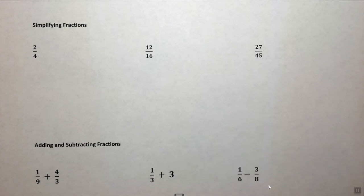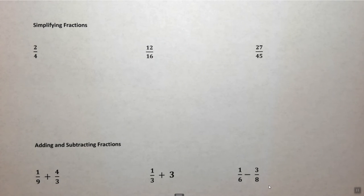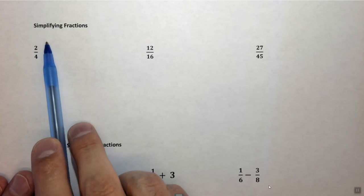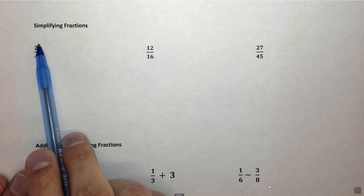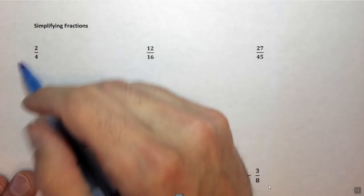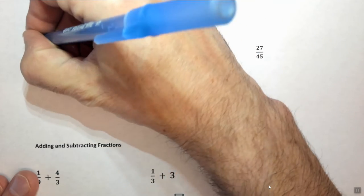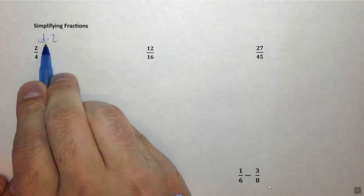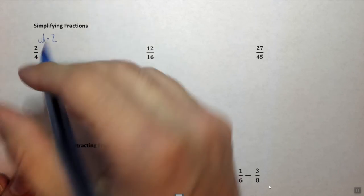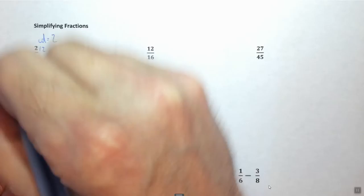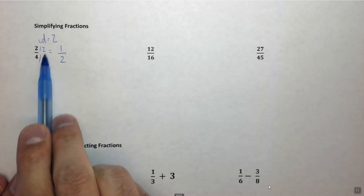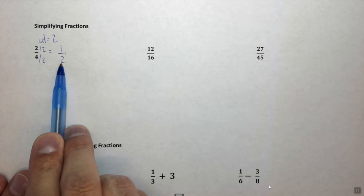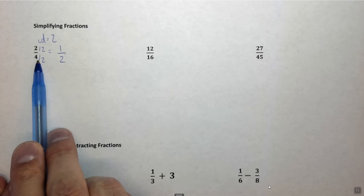So let's go through these, and I'm going to go through this relatively quickly. The first thing we have here is simplifying fractions. We have 2 over 4 and we want it in its simplest form. We need to find the common denominator, and in this case the common denominator is 2. So if we take the 2 and divide by 2, that's 1, and we take the 4 and divide by 2, that's 2. So if we divide both the top and the bottom by 2 we get 1 half, which is a simpler fraction than 2 over 4.